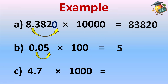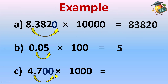Now, 4.7 multiplied by one thousand. There are three zeros in thousand, so the decimal shifts three digits. There is only one digit after the decimal, so we add two zeros to make three digits. Now we shift the decimal three places to the right, giving 4700. We drop the decimal since we only have the whole part, so the answer is 4,700.